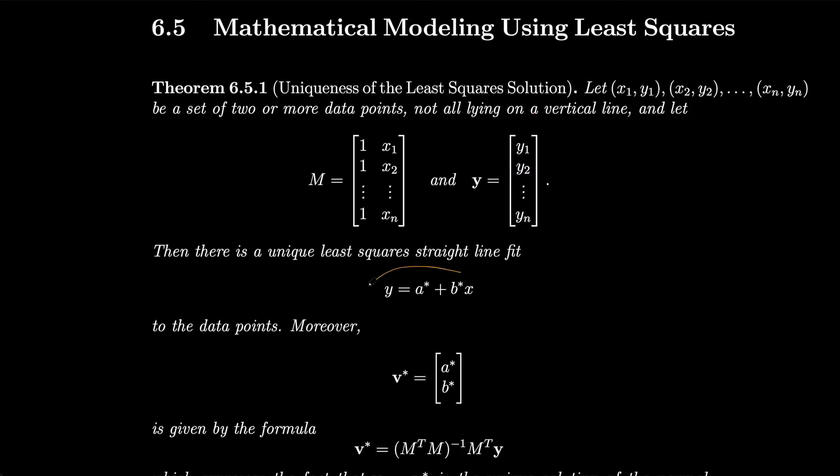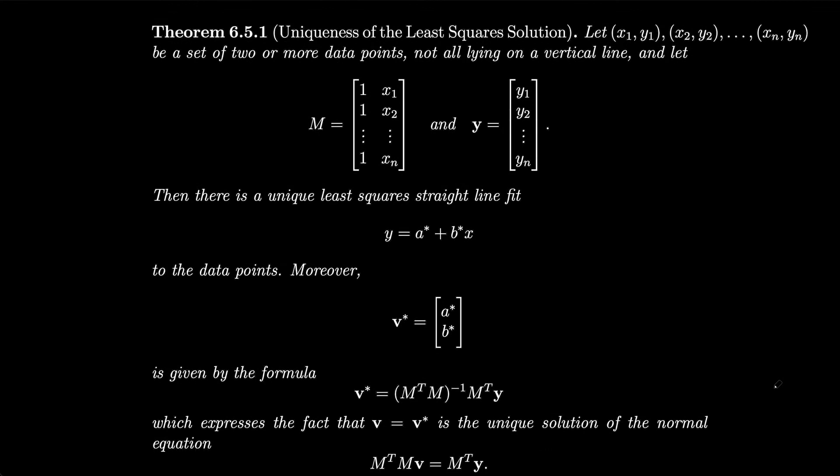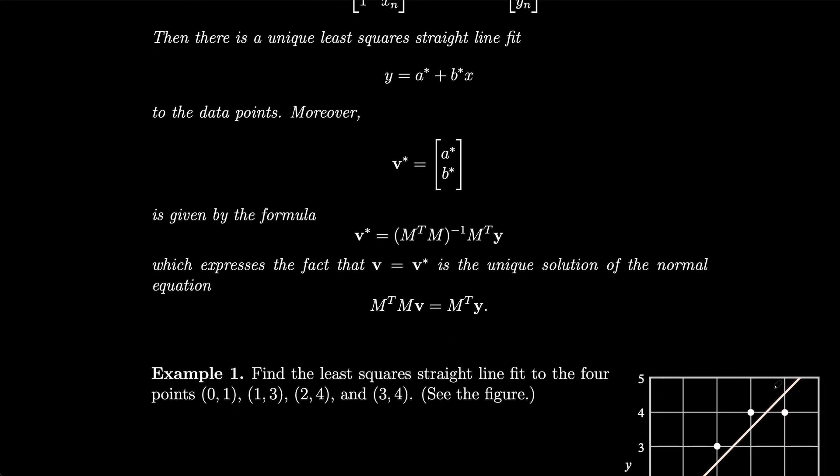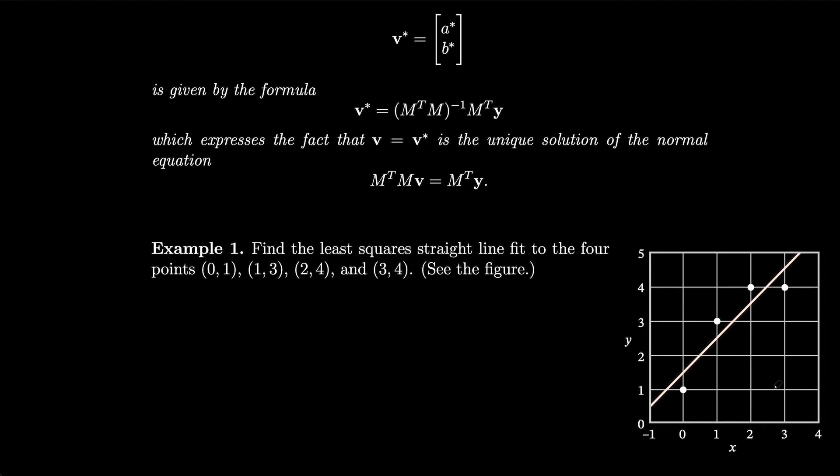Then we have a unique least square straight fit line given by y = a* + b*x to the data points. Moreover, we have an equation for v*, which is [a*, b*], given by the formula (M^T M)^(-1) M^T y. This shouldn't be super surprising given the previous section, but we'll still do a couple examples anyway, just to make sure that everything is clear.